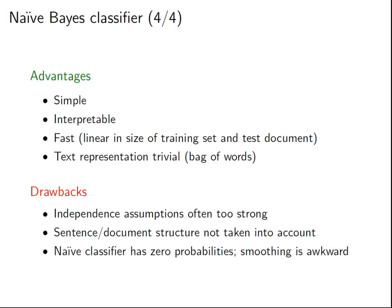Naive Bayes is also really fast — linear in the size of the training data. You just need to go through it once, collect all statistics, and the probabilities fall out. It's also linear in the size of your test document. The downside is the independence assumption. By saying we ignore intentional structure and just take the bag of words, in many cases this is actually too strong — it might work well for classifying newspaper articles, but it can go horribly wrong for sentiment analysis.